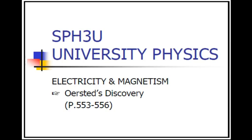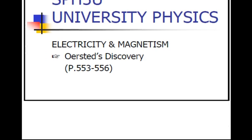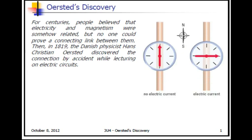For years there was not an understanding that electricity and magnetism were related. They were treated as two separate physical phenomena. But in 1819, Danish physicist Hans Christian Orsted discovered the connection. This lecture is going to talk about Orsted's discovery.